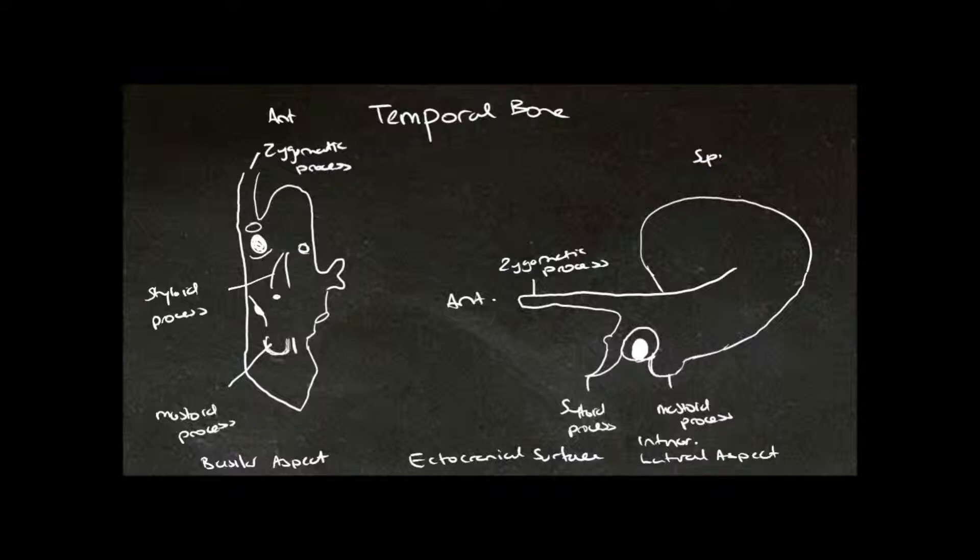We need to know which way is out and which way is in. We can use the squamous part of the temporal bone and also the external auditory meatus to tell us that we're on the external surface.